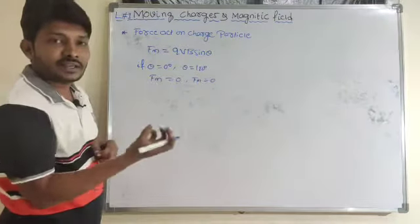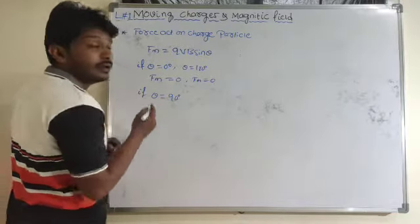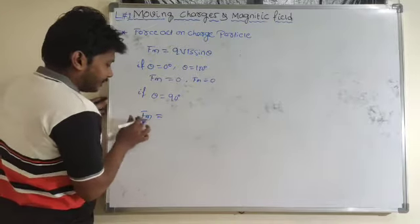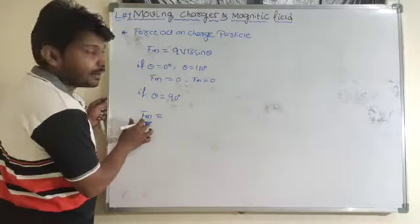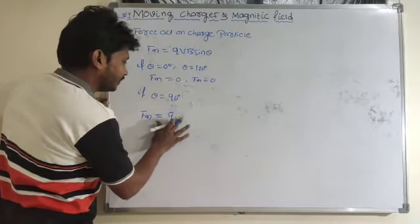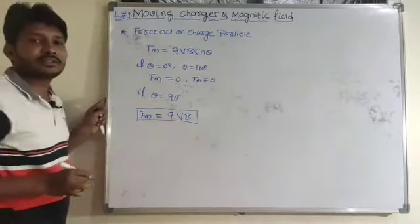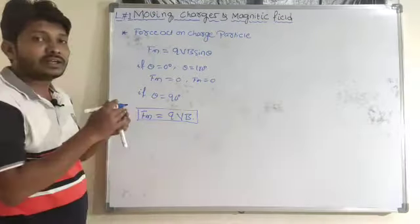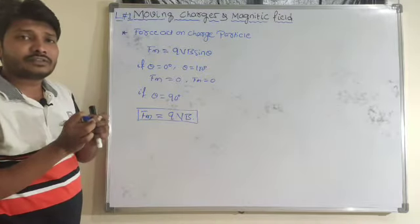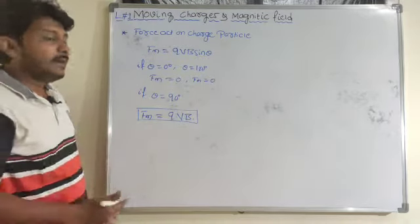When will the charge particle experience maximum force? If the charge particle is moving perpendicular to the magnetic field, then it experiences a maximum magnetic force F_M equal to QVB. When the charge particle experiences maximum force — when it is moving perpendicular to the magnetic field — what will be the trajectory of the charge particle?